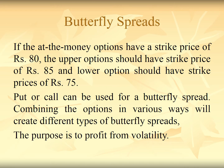For example, if the at-the-money option has a strike price of 80, the upper option should have a strike price of 85 and the lower option should have a strike price of 75 — they must be at equal distance from the at-the-money strike price. Puts or calls can be used for a butterfly spread, or a combination of puts and calls can be used. Combining the options in various ways will create different types of butterfly spreads, and the purpose is to make profit from the volatility of the market.